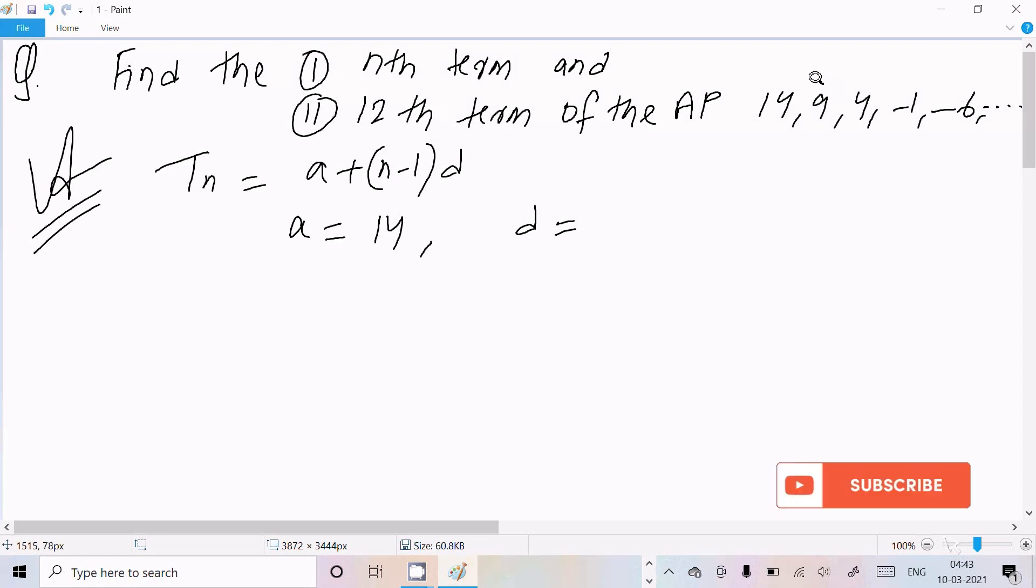And d is the difference between these two terms. So here 9 or 14, the difference comes here minus 5, and 4, 5 that same difference minus 5. Minus 1 minus 4, the difference comes minus 5.